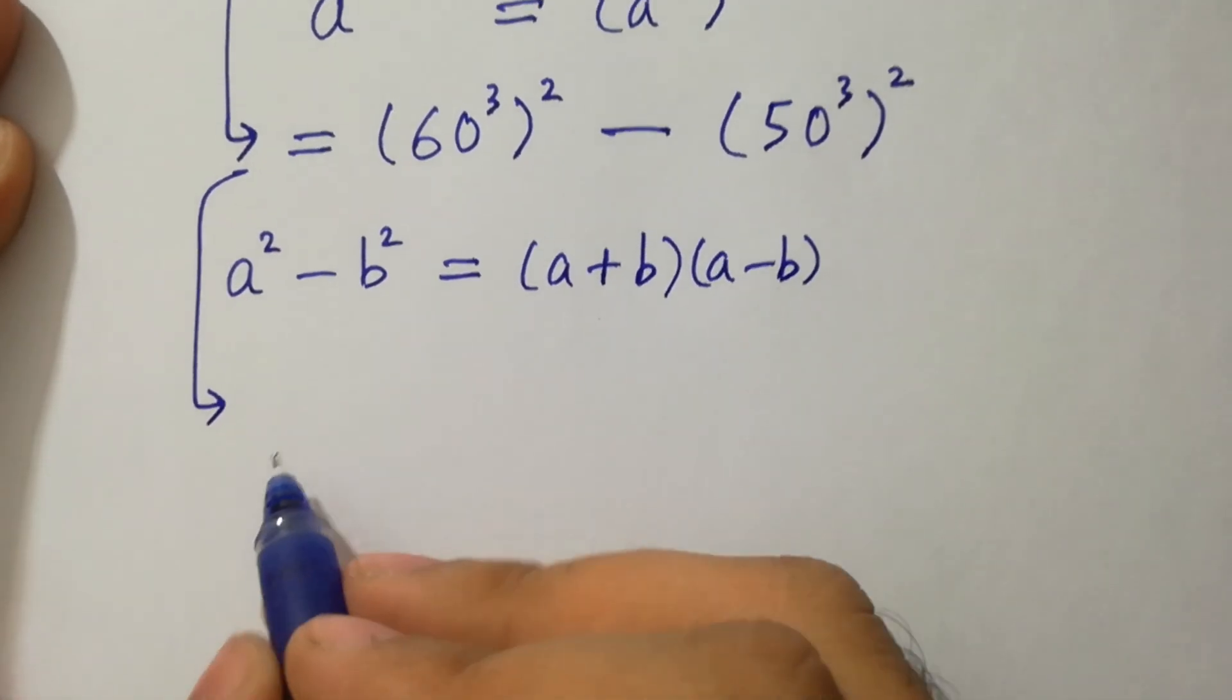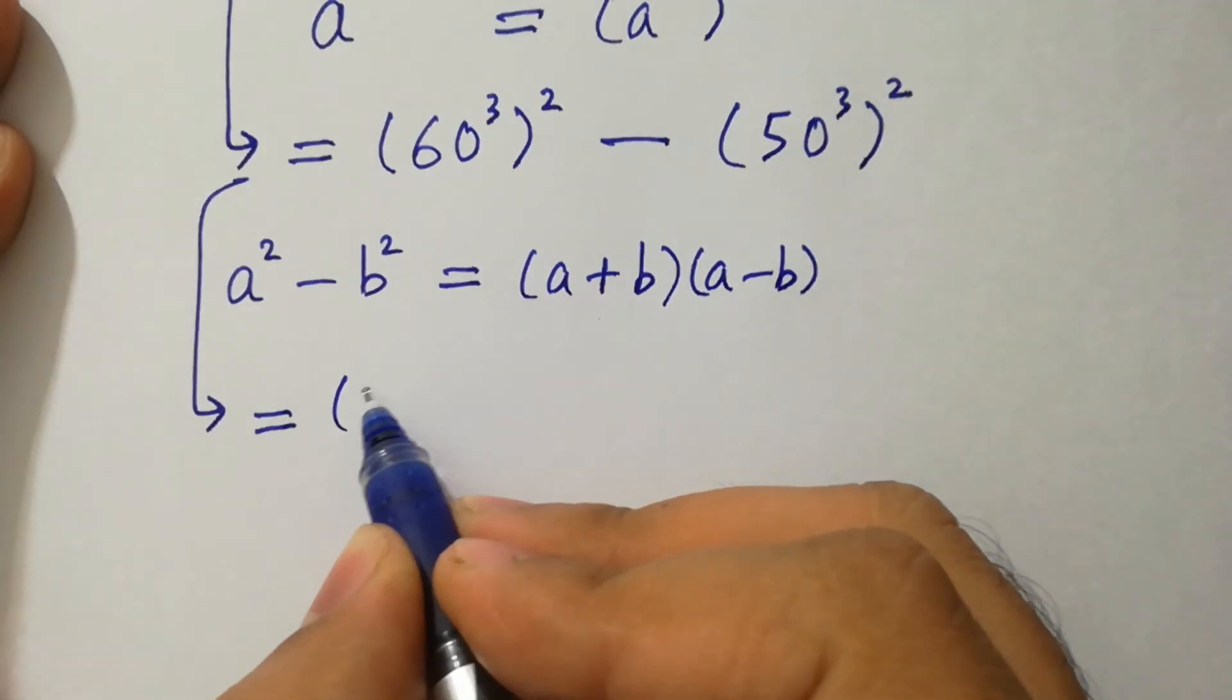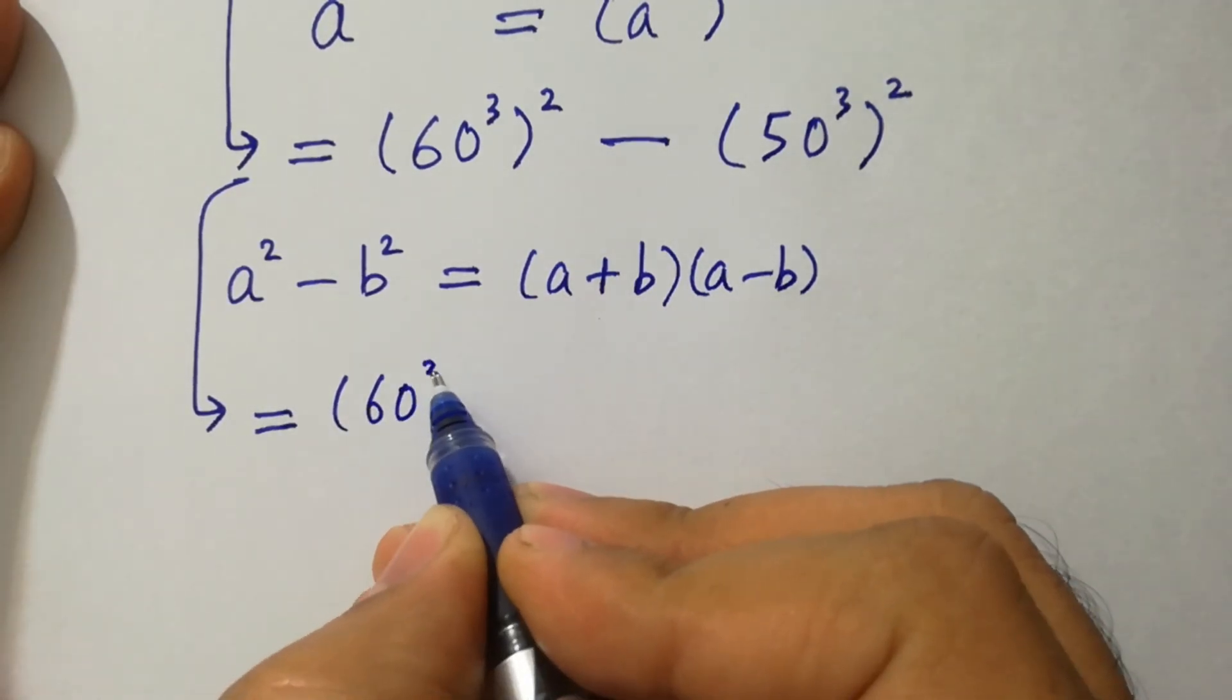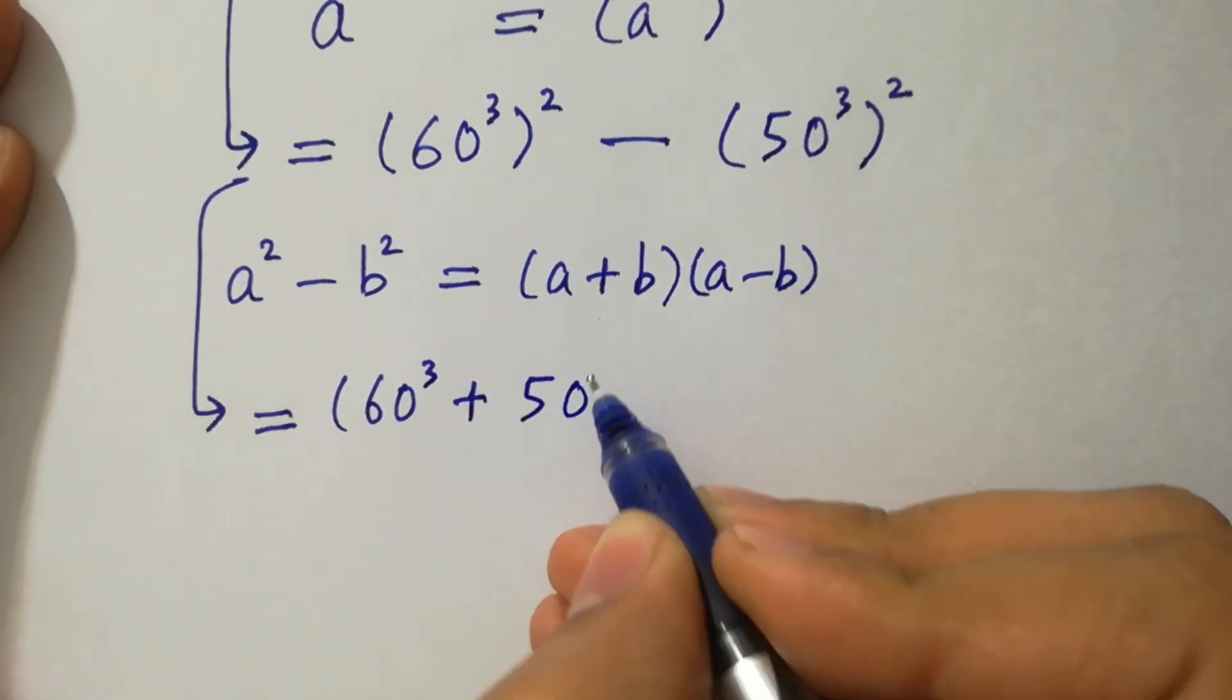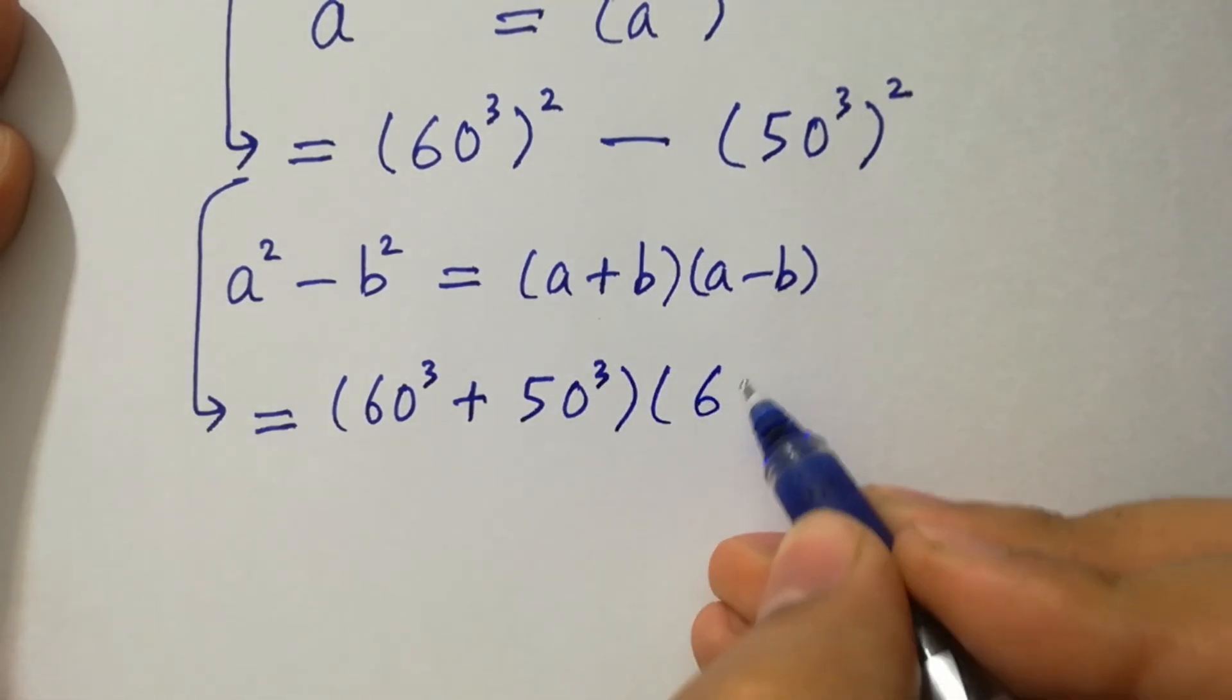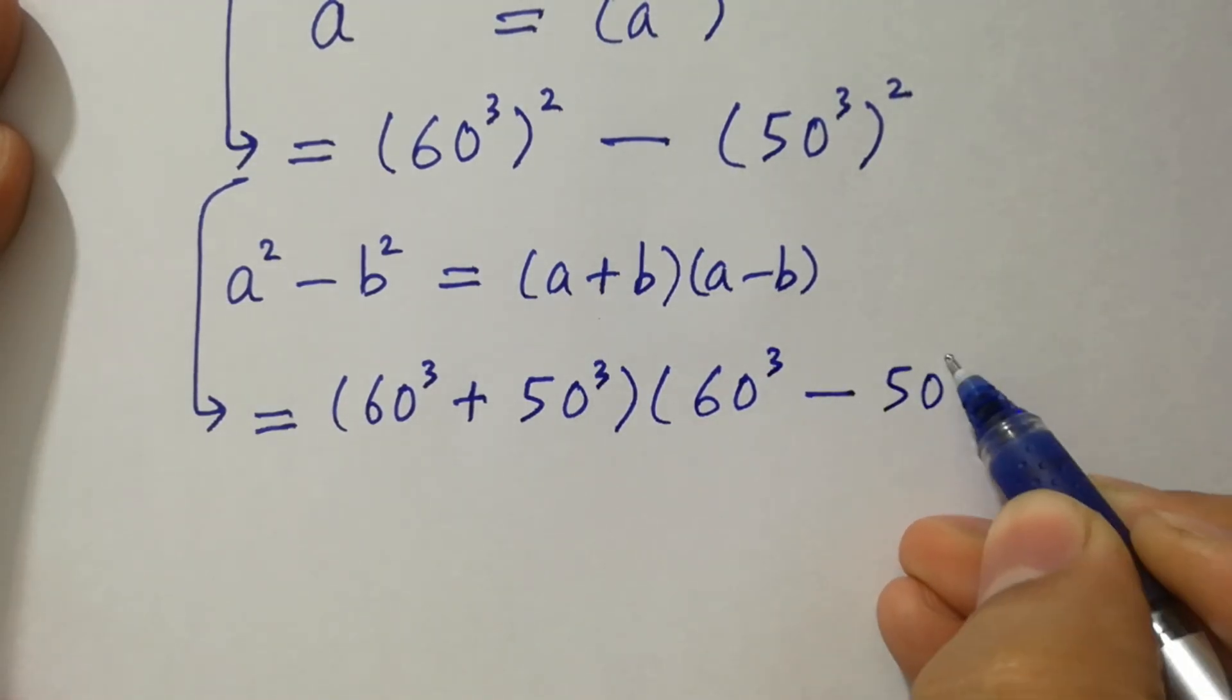We have then 60 cube plus 50 cube, 60 cube minus 50 cube.